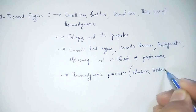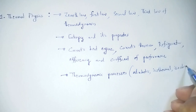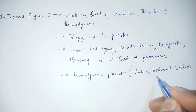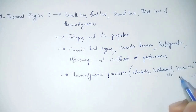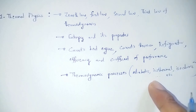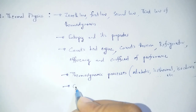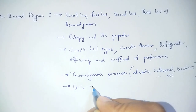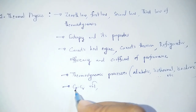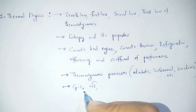Thermodynamic processes including isothermal, isochoric, and related processes — work done and heat generated calculations. Also, Cp minus Cv relation, that is, specific heat at constant pressure minus specific heat at constant volume.